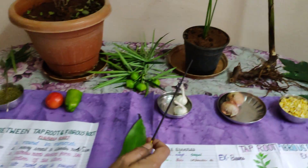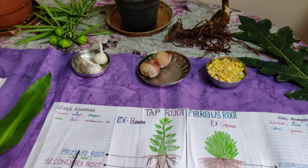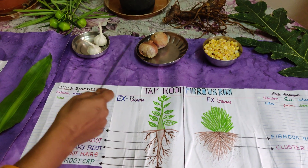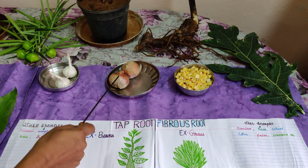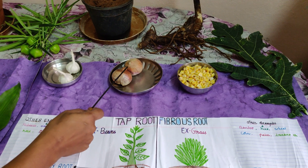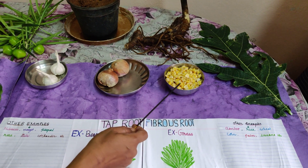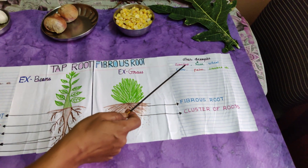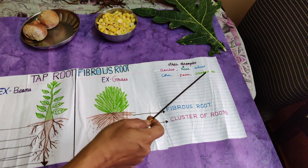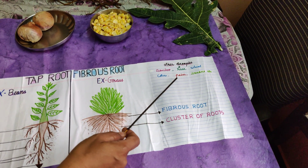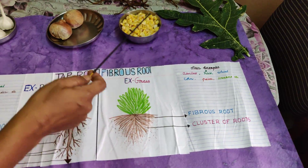The best examples of fibrous roots are garlic, onion, corn, papaya, bamboo, palm, etc.